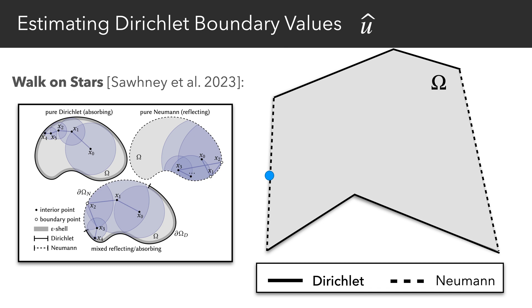We run several walks for each boundary sample on the Neumann part of the boundary to estimate the complementary Dirichlet values.